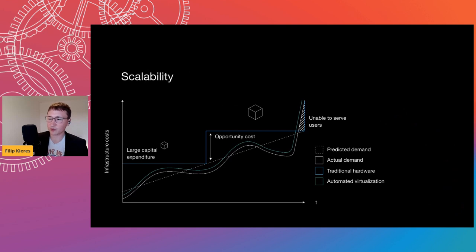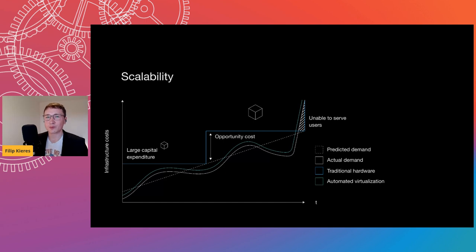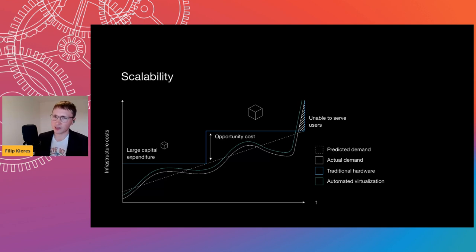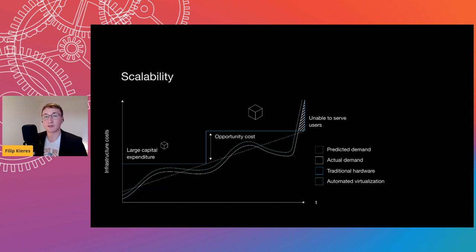In the past, when you wanted to scale up a web server, the only way was to dismantle the whole thing, put in more RAM or disk, and boot it up again. This came with large capital expenditure costs and wasn't as scalable as today's automated virtualization. Virtual machines are kind of big and clumsy, which is why everyone is moving to containers — because containers can start up rapidly.